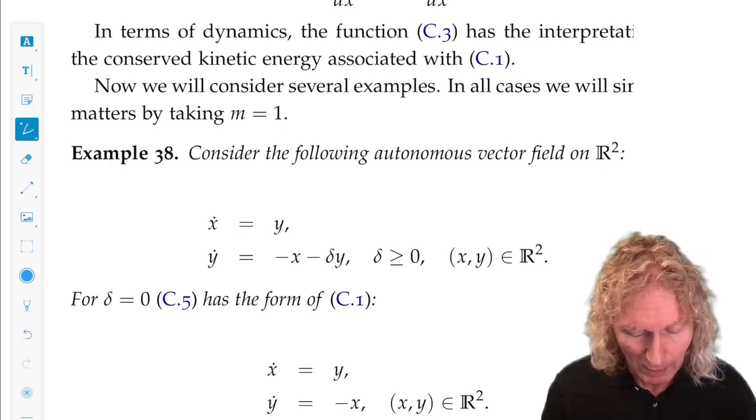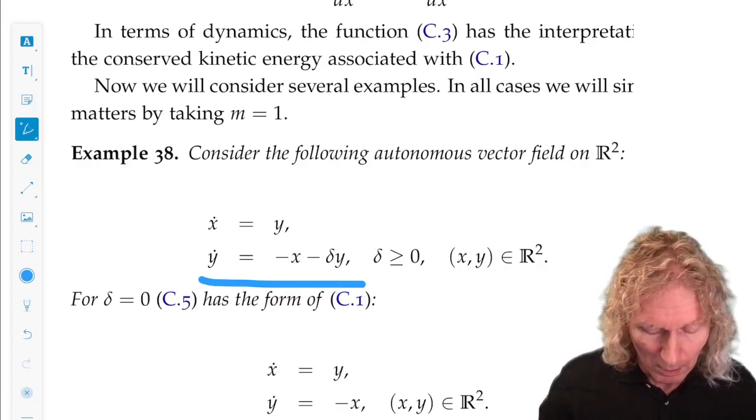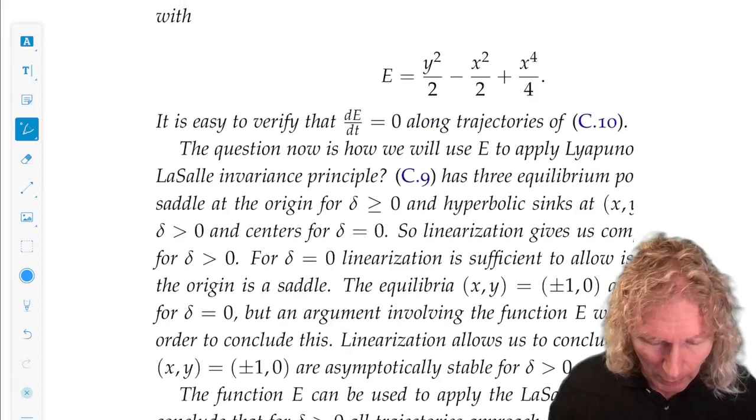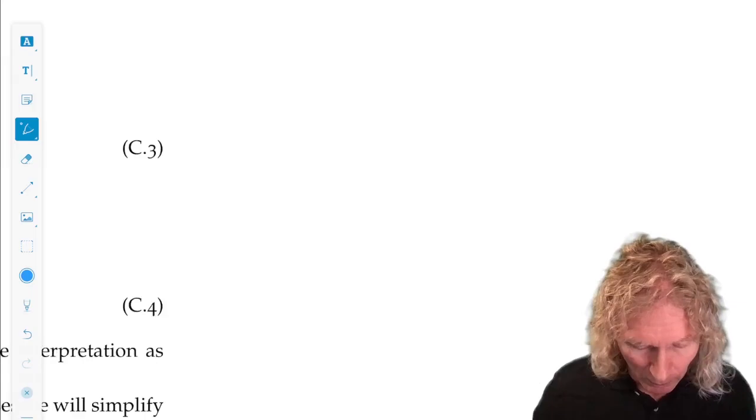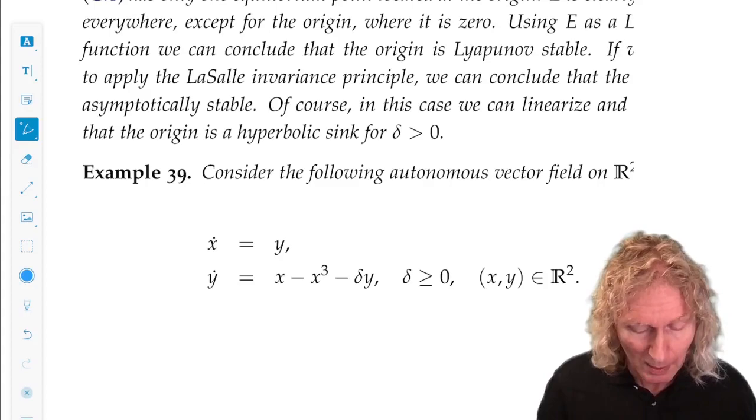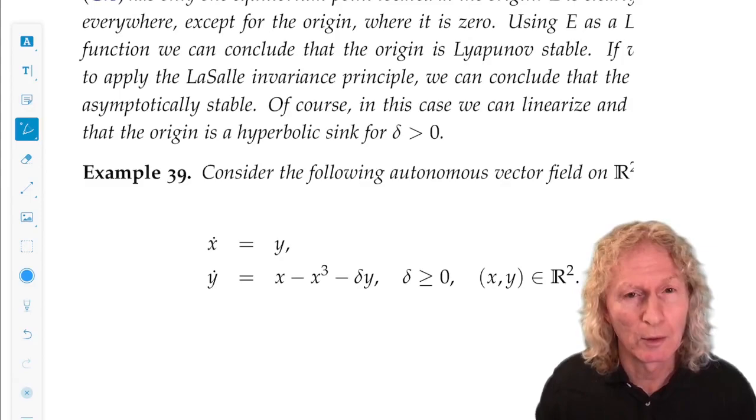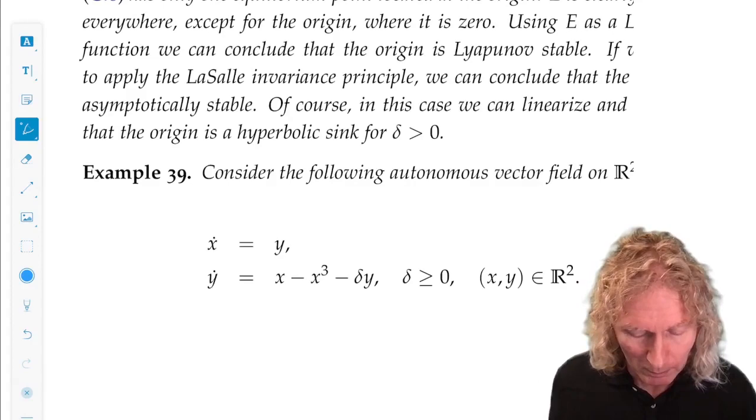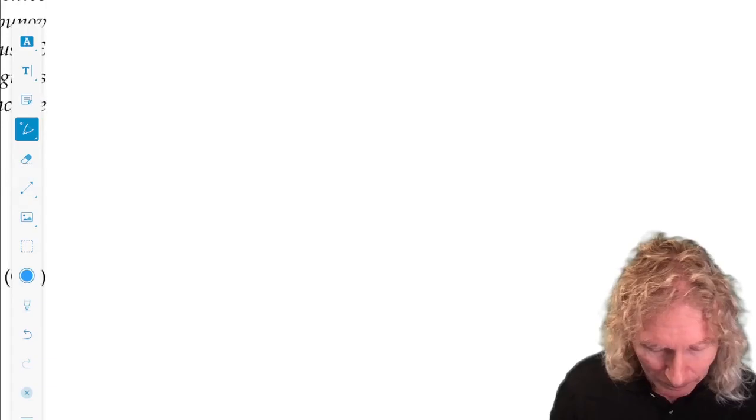Now, in this particular case, we can easily linearize. Okay, now let's look at a more complicated example. And I told you earlier on that you would see where my funny example came from, my function that I use for this. So, x dot equals y, y dot equals x minus x cubed minus delta y. And this is the one which has three equilibria. Okay, it's a saddle point at the origin and sinks to either side at plus or minus one zero.